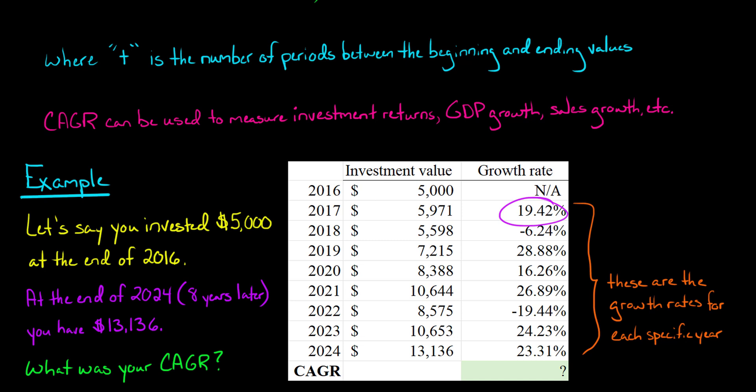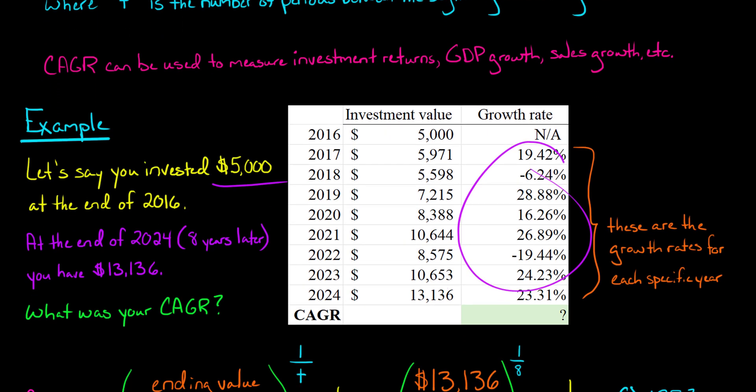So I've got growth rates here for each specific year. This is what happens to the investment in 2017, 2018, and so forth. So we've got from the end of 2016 to the end of 2024, so there's eight years of difference between when the investment was made and the final value. So you invested $5,000, and then eight years later, you have $13,136. And you have all these different returns for each year, but then the question is, what is the compound annual growth rate? And we're going to calculate it using the formula that I showed you.